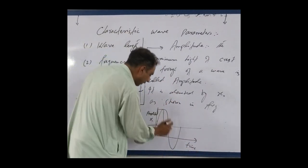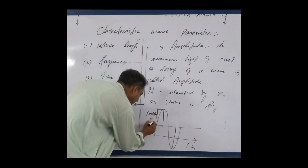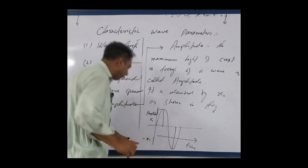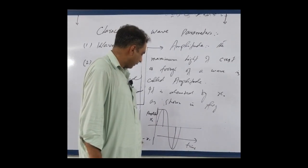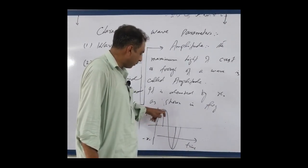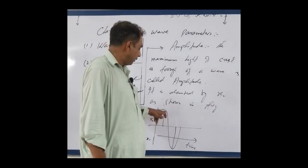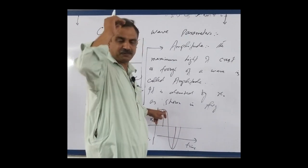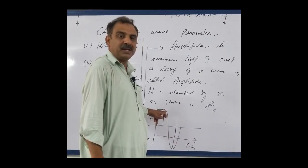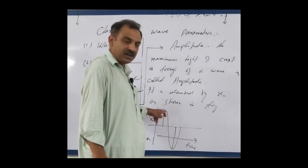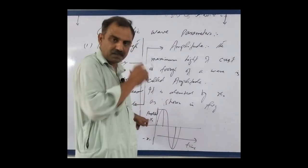The maximum height of the crest is denoted by x0, and the trough is minus x0, where the negative sign indicates the opposite direction. This maximum height represents the limit — the wave cannot exceed its crest beyond this range. This maximum height of the wave is the amplitude.